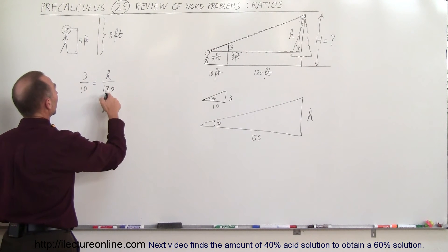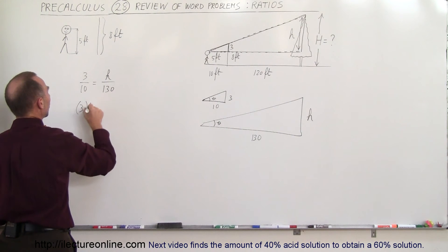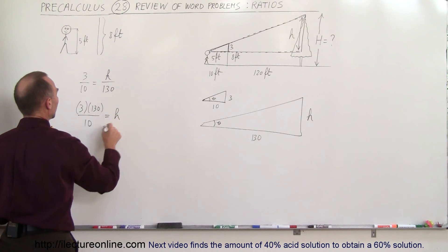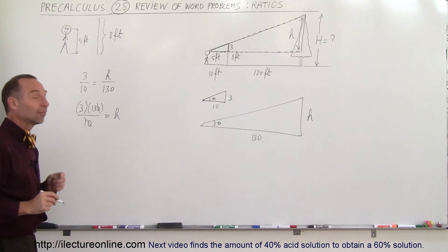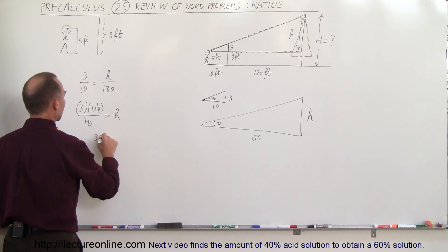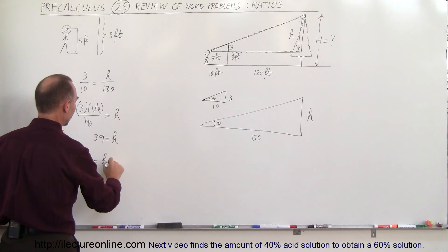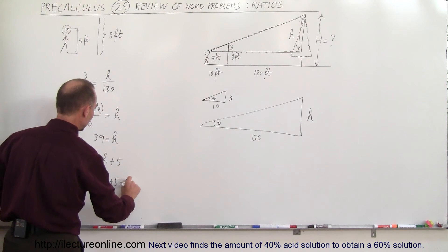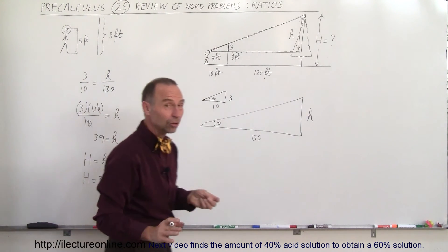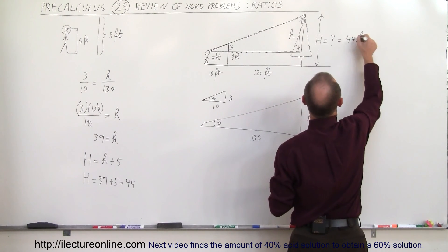What we can do here is cross multiply, make the 130 go up here, so this would be 3 times 130 divided by 10 which is equal to h. So these zeros, the 10 cancels out the 0 of the 130, and so we can say that 39 is equal to small h. And since big H is equal to small h plus 5 feet, then big H is equal to 39 plus 5 which is 44. So we can conclude, since all the dimensions are in feet, that the height of the tree is 44 feet tall.